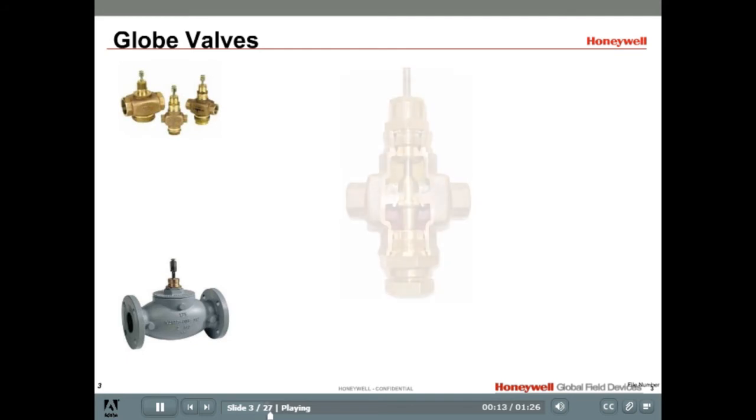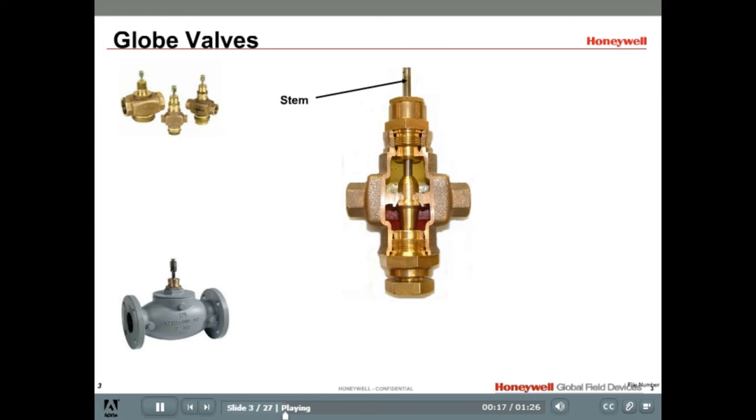Here's a cutaway of a V5011 globe valve. The stem is the shaft that connects the valve actuator to the disc. The disc contacts the valve seat to close off flow. Some valve assemblies are built so the disc is replaceable, or the disc may be a machined segment of the brass plug. The disc will close off against the valve seat, which may be a machined part of the valve body or a replaceable valve seat as depicted here.